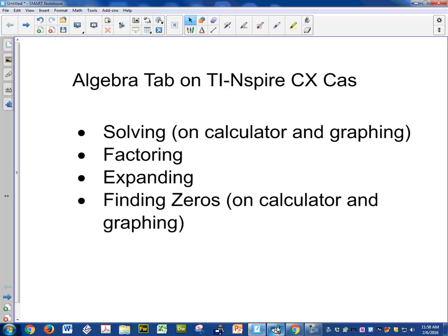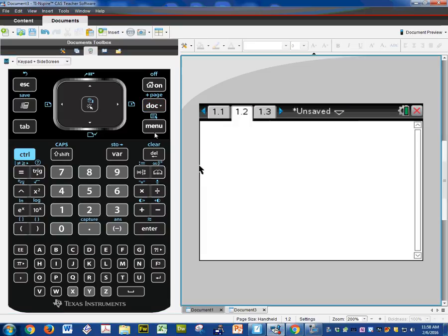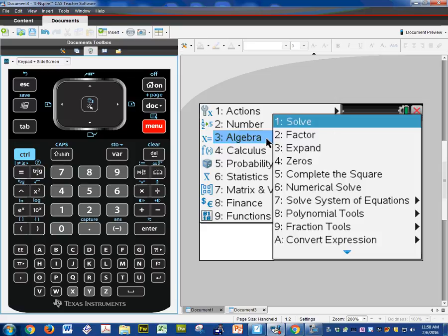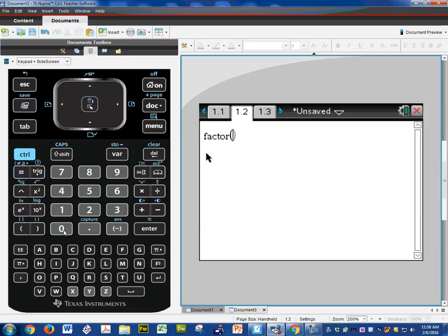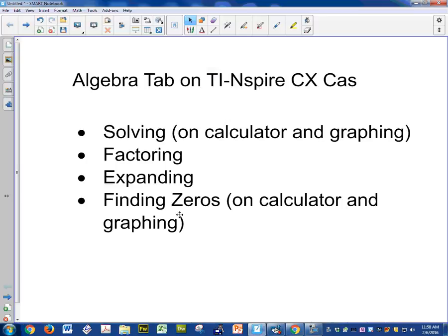Factoring. Let me pull up a new. So to factor something, Menu, Algebra, Factor. And let's say I want to factor x squared minus 9. Since I'm factoring, it doesn't have to be an equation. So no equal to zero. And just hit Enter there. And factors form.